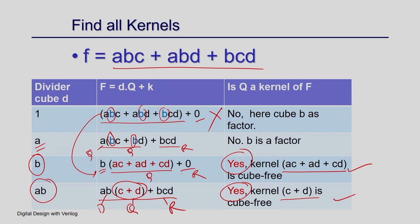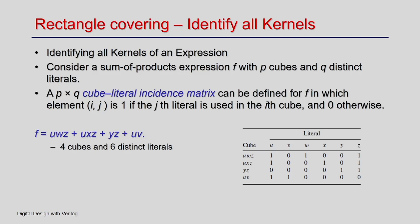The question is: given a large function with perhaps hundreds of variables, it is not obvious to identify kernels manually. We need automation — specifically, a kernel extraction method using rectangle covering, where we construct a matrix and identify rectangles that represent kernels.